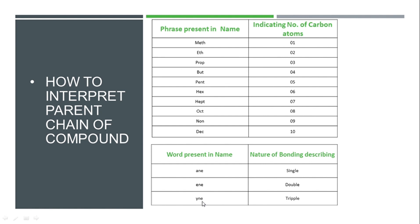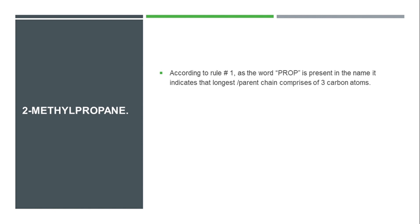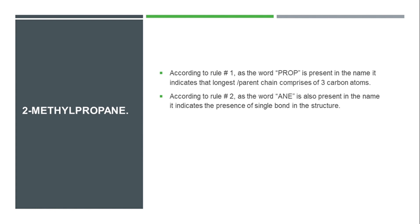Applying rules 3 through 6, we draw the structural formula. The first part of question 4 asks us to draw the structure of 2-methylpropane. In this IUPAC name, the phrase 'prop' is present, which means a chain of 3 carbon atoms is required. The last three alphabets are 'ane,' meaning all bonds are single bonds. According to rule 3, we draw the carbon skeleton with 3 carbon atoms, all connected by single bonds.